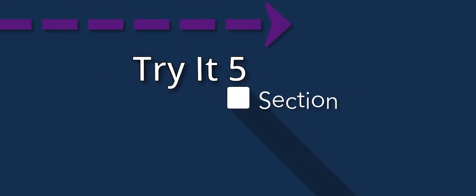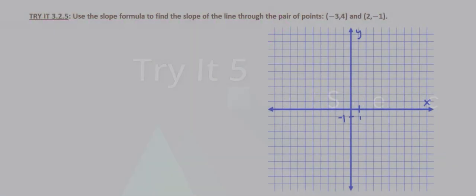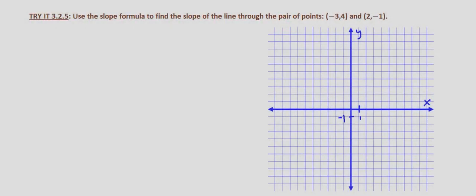In this problem we are asked to find the slope of a line that goes through two given points: negative three, four and two, negative one, using the slope formula.